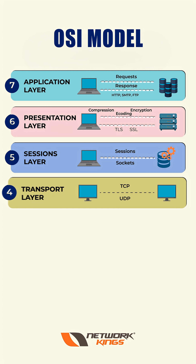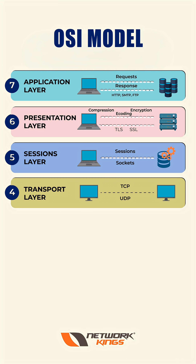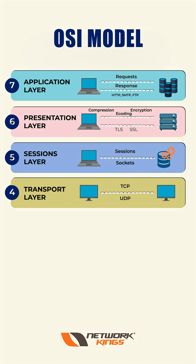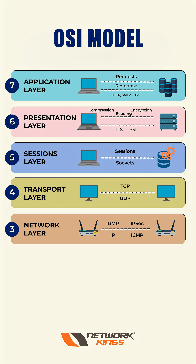In the transport layer, the data is divided into segments, and the transport layer decides which protocol will forward the data. The forwarding protocols are TCP and UDP. All the data is converted into segments, and this is where we say that the transport layer has segments, which also adds a port number.